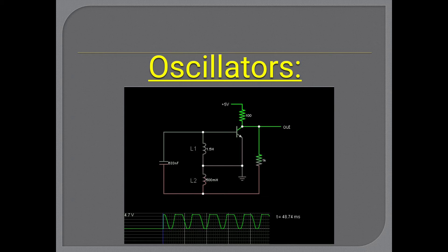An amplifier is basically an energy converter — it receives energy from a DC power source and converts it into AC energy at any signal frequency. The AC input signal controls the process of energy conversion, and in the absence of an input signal, no energy conversion takes place and there is no output. But in an oscillator, no external signal is required either to begin or to mount the energy conversion process, and it produces sustained oscillations.